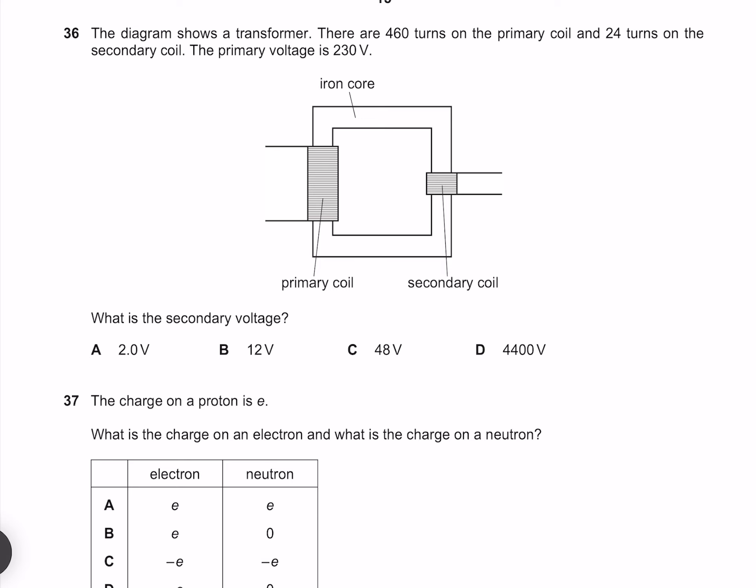The diagram shows a transformer. There are 460 turns on the primary coil and 24 turns on the secondary coil. The primary voltage is 230 volts. What is the secondary voltage? The ratio of our voltages is equal to the ratio of our turns. Multiplying both sides by 230 gives me 12 volts. So our answer is B.